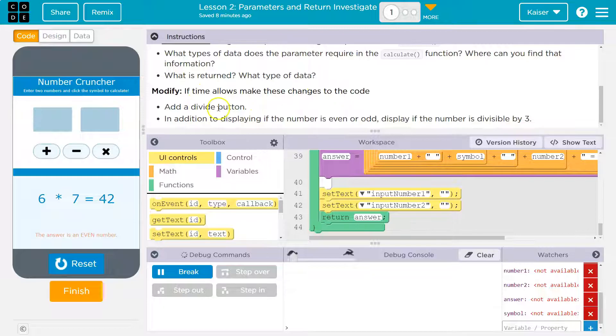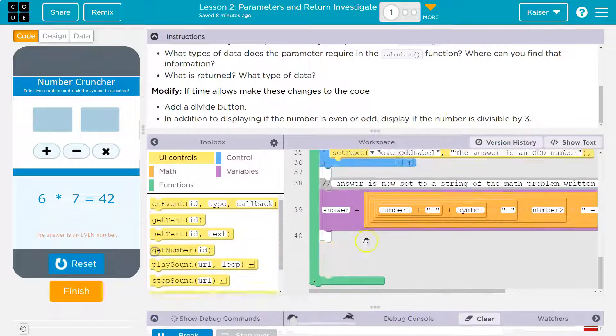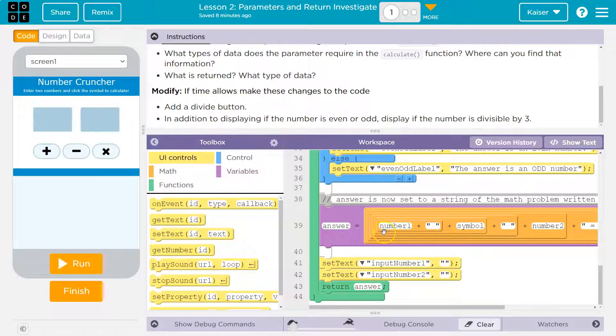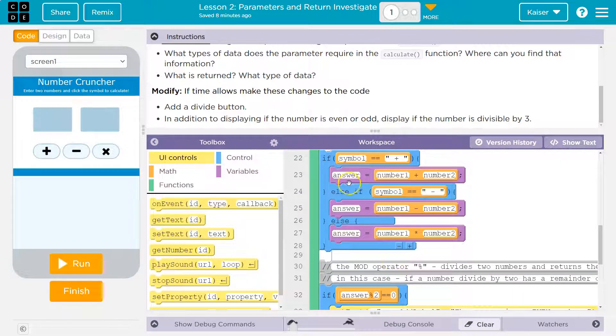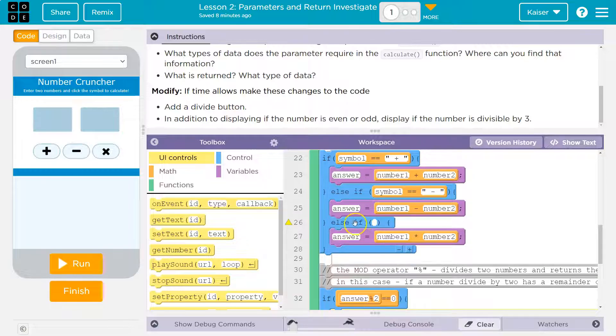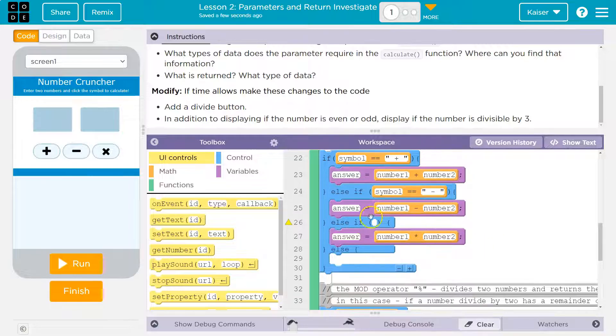In addition to displaying if the number is even or odd, display if the number is divisible by three. I love it. Okay. So first we need an if time allow, a divide button. I'm going to hit up here. So we have an else. I'm going to hit a plusy thing, right? And notice what happened. I hit plus, and this became an else if, which is fine. Now I'm going to check, just like I did above, if symbol is equal equal to, and then in quotes, I'm going to do a space, multiplication sign, space.